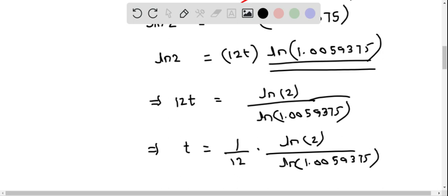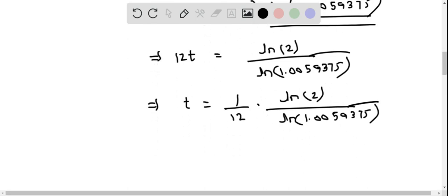Plugging these values into a calculator gives t approximately equals 9.75 years. This is the time required for the money to double.